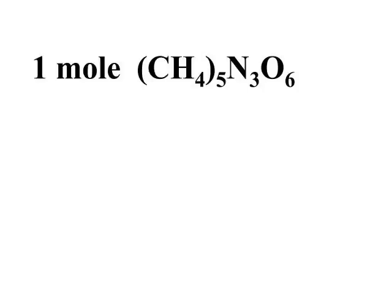You can also look at this formula in terms of 1 mole of molecules. If you had 1 mole of molecules, your ratio of atoms stays the same as in 1 molecule — but now instead of 5 carbon atoms, you have 5 moles of carbon atoms, 20 moles of hydrogen atoms, 3 moles of nitrogen atoms, and 6 moles of oxygen atoms.